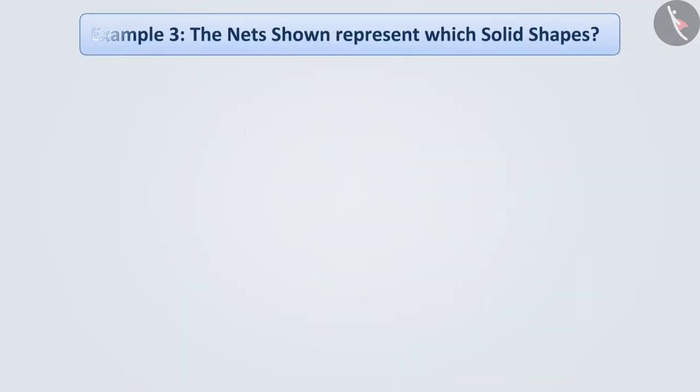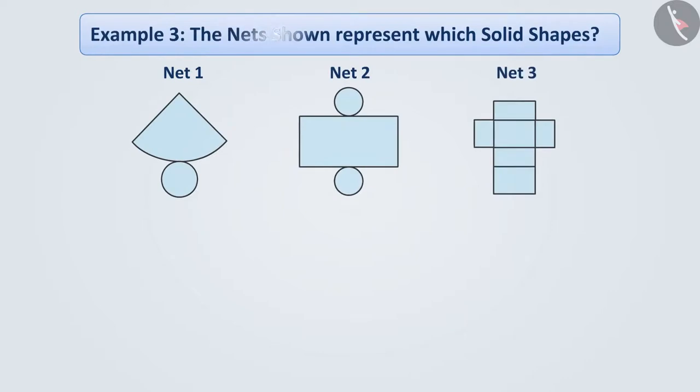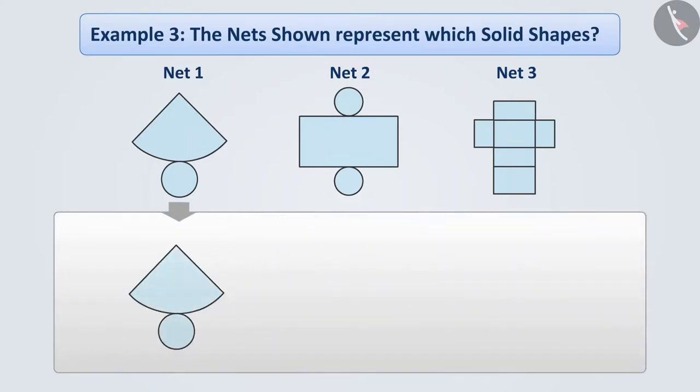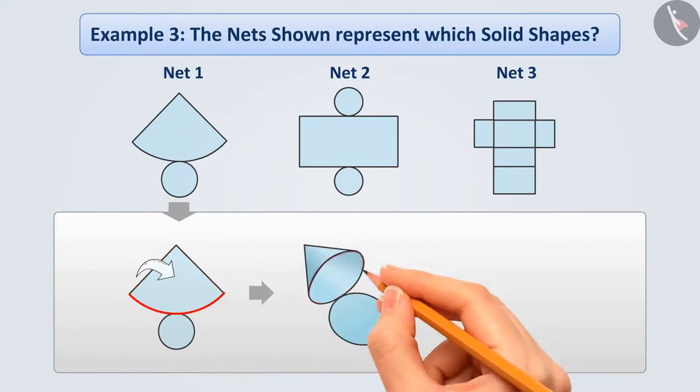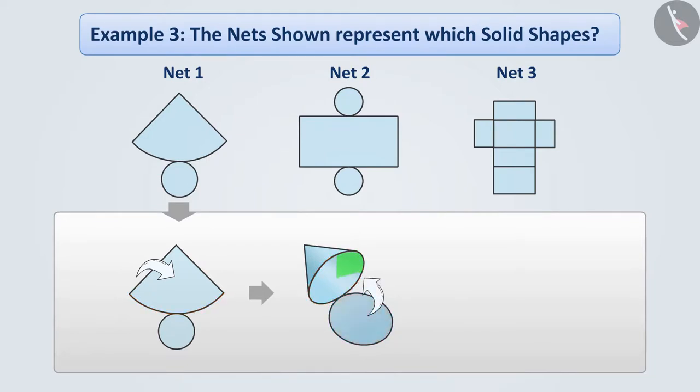Example 3: The nets shown represent which solid shapes. Let us talk about the first figure. If we rotate one of its straight sides to the other straight side, the curved part takes the form of a circle. By folding the circular shaped plate, we cover the open area. This gives us the shape of a cone.